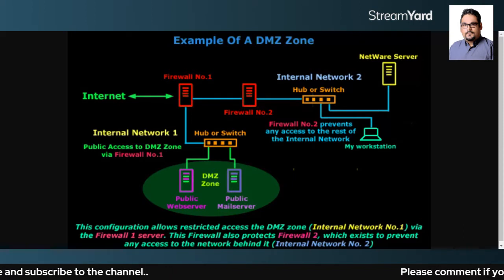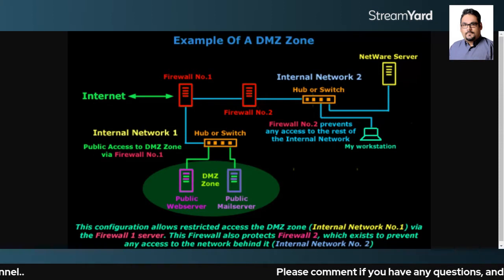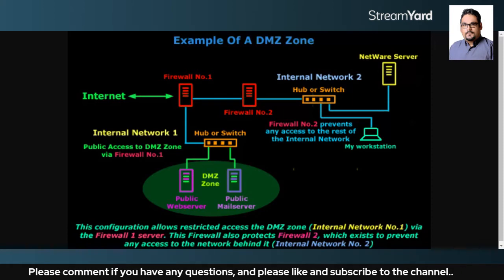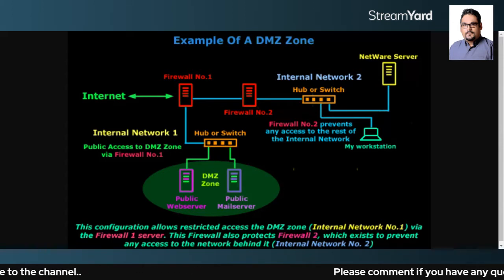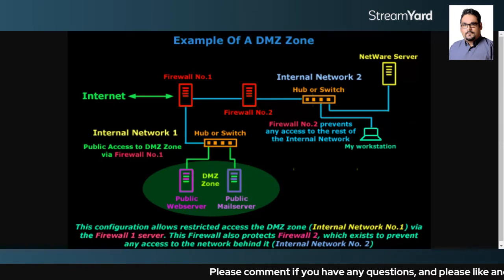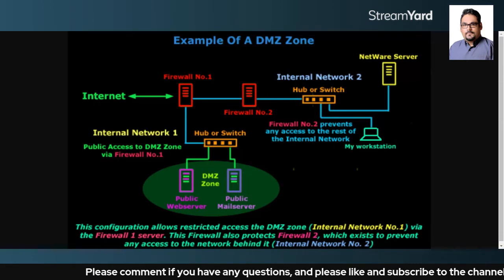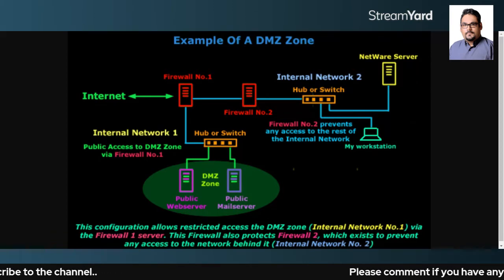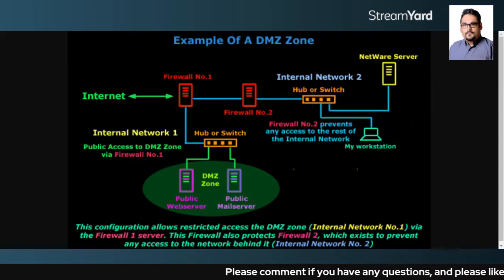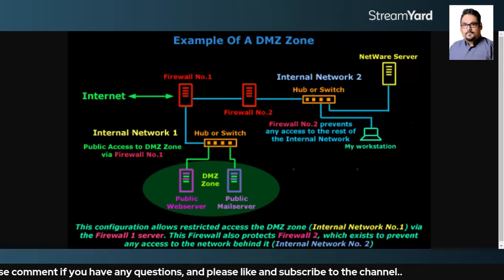DMZ provides a level of network segmentation that helps protect the internal network by adding a layer on top of it, so that remote access is restricted and attackers cannot find their way inside. Whenever you have business applications — like a public web server or a public mail server — servers exposed to the internet, you keep them in a DMZ.